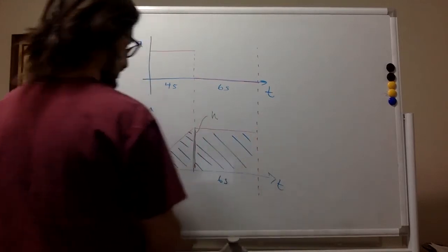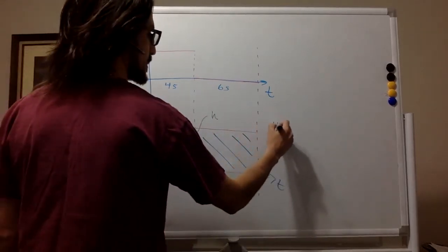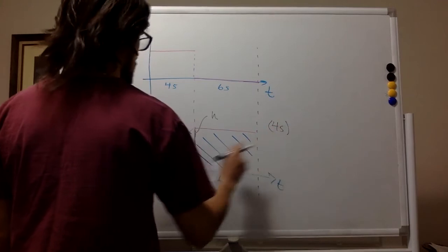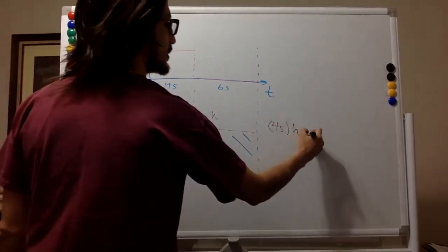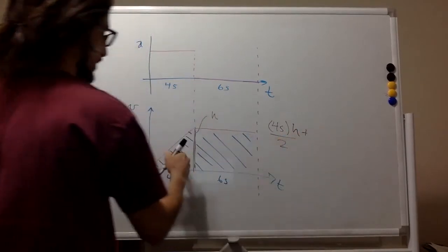So the width is four seconds and the height is h. The area is width times height divided by two because it is a triangle.